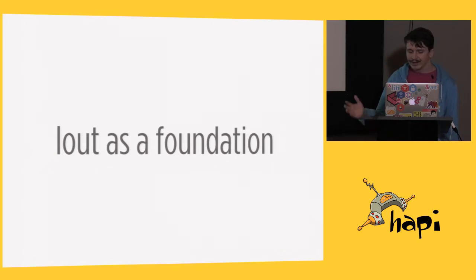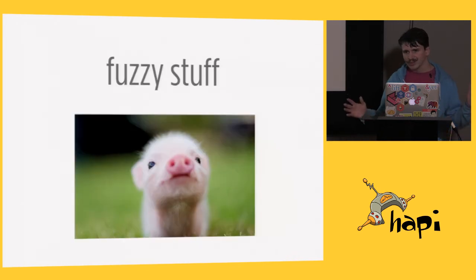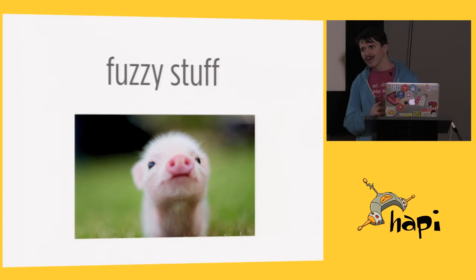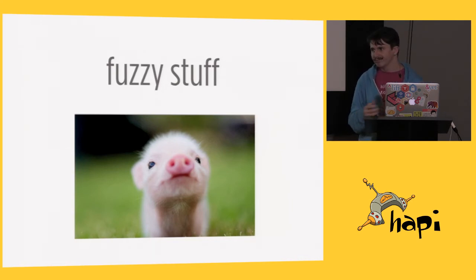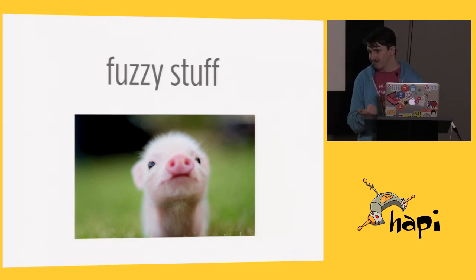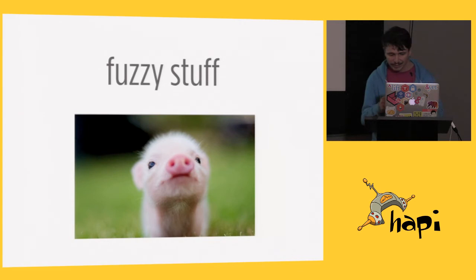There are also parts of your application, like your route handlers themselves, that are still not going to be using necessarily a set pattern. You can use promises or callbacks. You can use any kind of database or connection library that you want. That kind of stuff is difficult to parse once again.